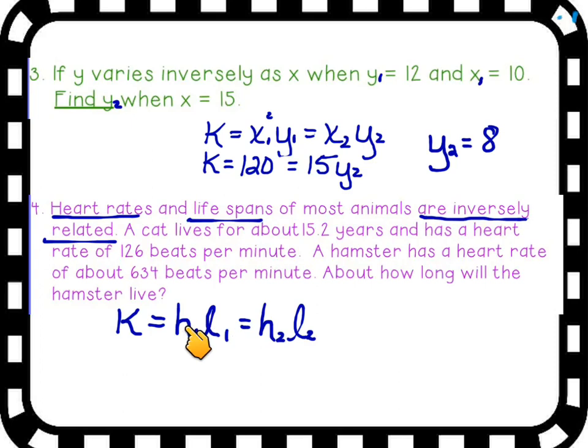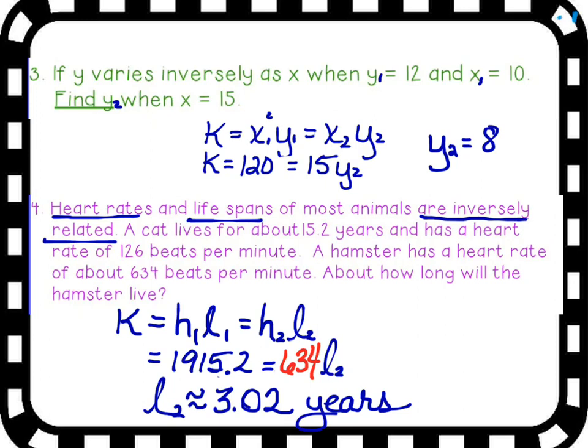So when I multiply these two numbers together, it's got to be a constant. It's got to be the same number. So for a cat living 15.2 years and heart rate at approximately 126 beats, if you multiply these two numbers, you get 1,915.2. Now, the hamster's heartbeat and lifespan have to be the same. So we know that one of those pieces is 634. So just by simply solving this equation now, you get approximately three years, which is about right. If any of you have had a hamster, you know they don't last too long for one reason or another.